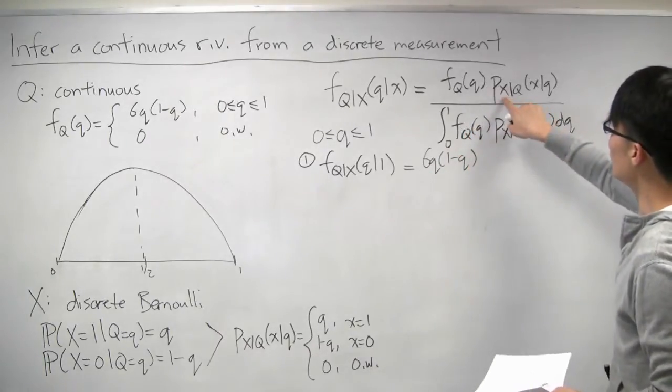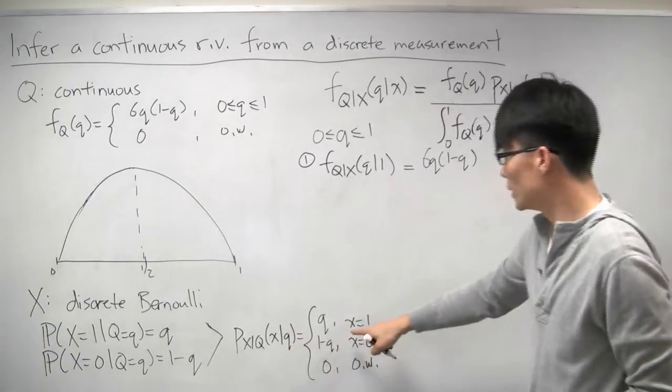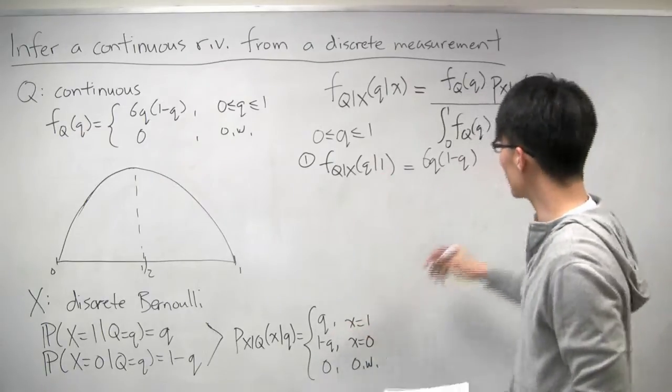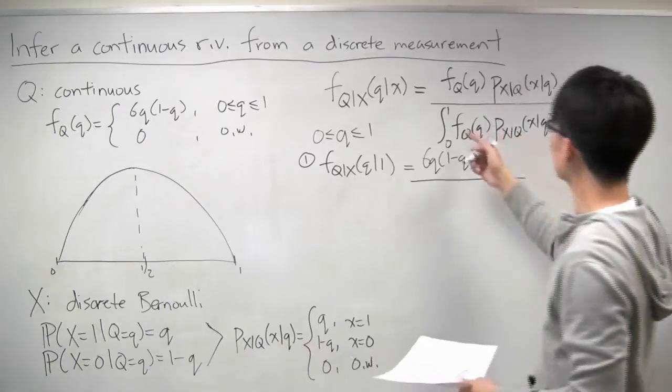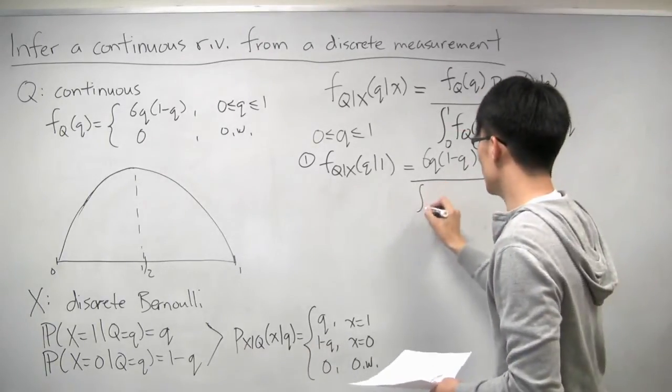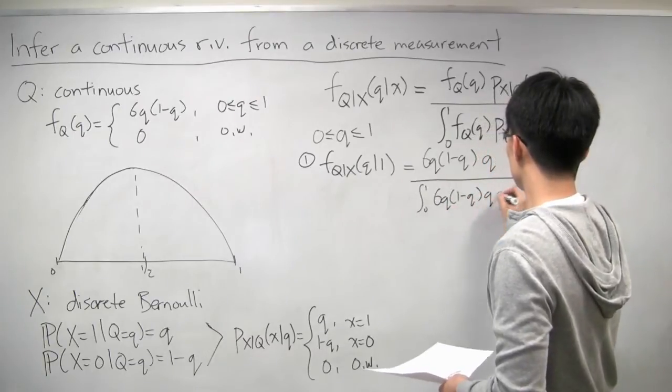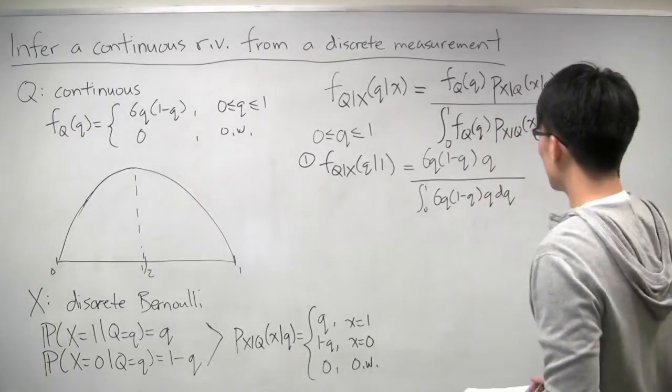And the conditional PMF of x, we know that from our model. Because we're looking at the case where x equals 1, that conditional PMF is just q. And the denominator is really the same as the numerator, except you integrate it. So it's the integral of 0 to 1 of 6q times 1 minus q times q dq.